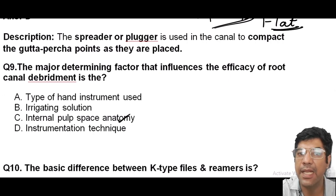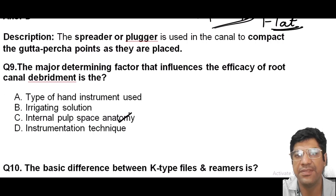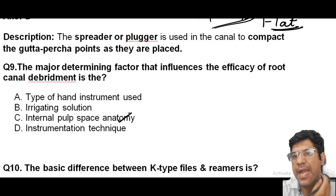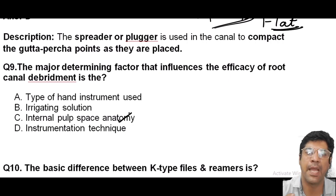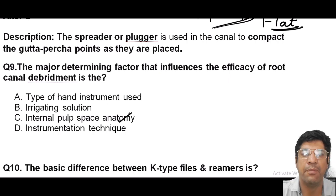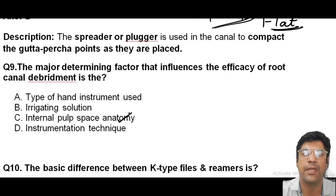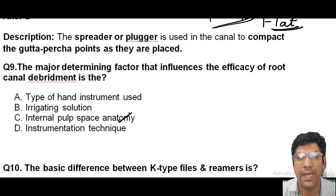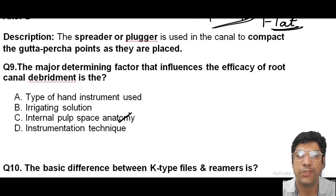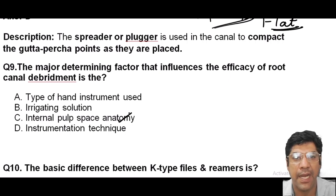The internal pulp space anatomy — including the number of canals, their curvature, branching, and anatomical anomalies — is the primary determinant of debris removal. For a tooth with multiple curved canals and accessory canals, thorough debridement will be more challenging due to the complex internal anatomy, regardless of instrument or technique used. The choice of instrument, irrigation solution, and technique are all important, but the internal pulp space anatomy plays the most important role.